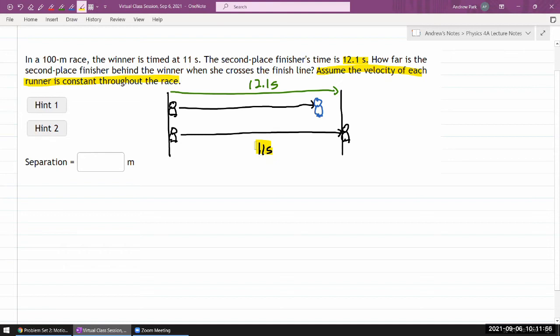Since this is a physics class, let me make use of some of the definitions you've learned. In particular, velocity is change of position over change of time. We know the velocity of the second place finisher. The velocity of the second place finisher is going to be the displacement, 100 meters, divided by the time it takes to get to the finish line. That's 12.1 seconds.